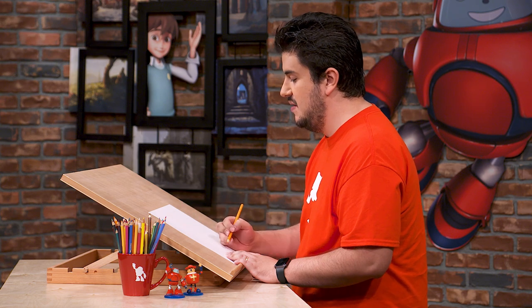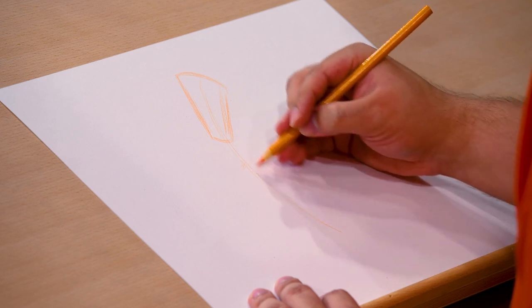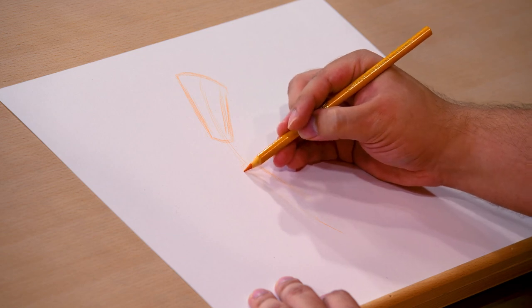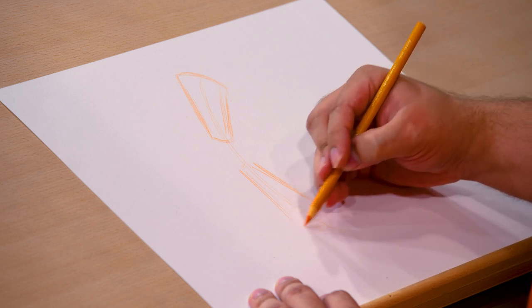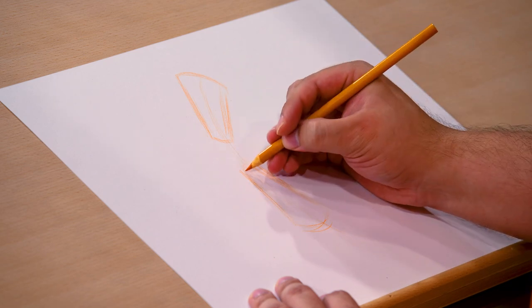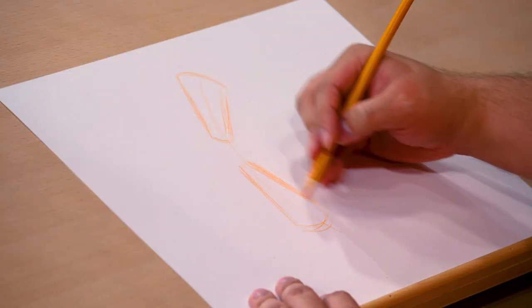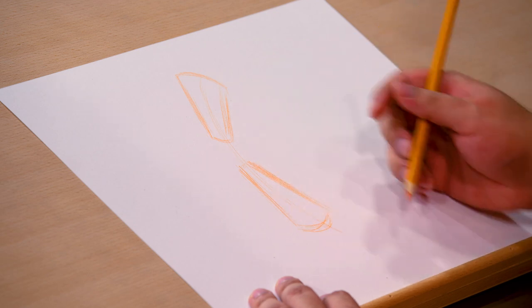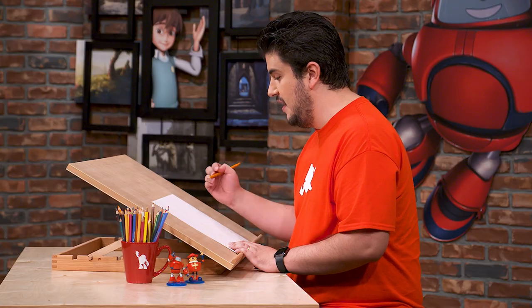We're gonna do a similar shape and even a similar size for his body, which is also kind of a triangular cylinder. But that one's gonna start small at the top and get bigger at the bottom, so it's the opposite of his head. You can see how many lines I'm doing here because I'm trying to find the right angle. That's why it's important to draw light so you can figure out what the best shapes are.